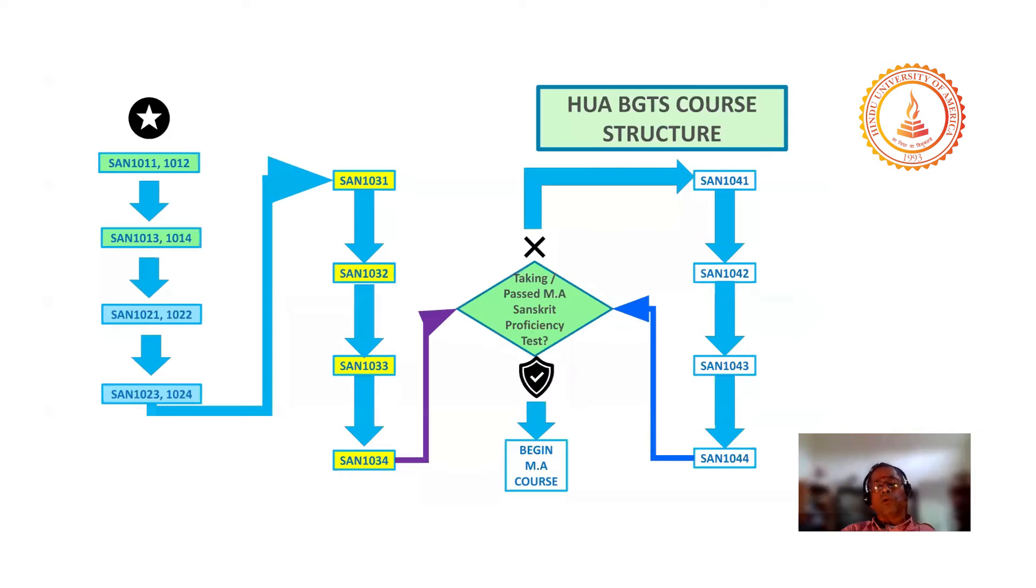And then he talks about the four different kinds of people in our society. Those who are very much focused on the wisdom part of it. Each one of us has different combinations, percentages of these kinds of qualities.